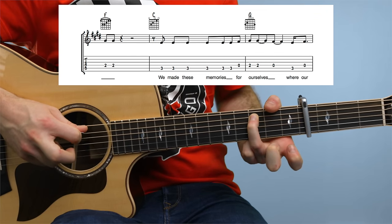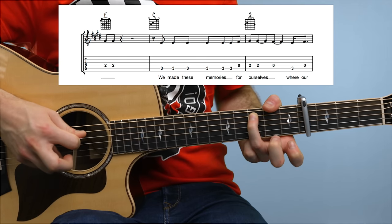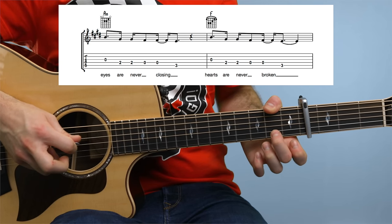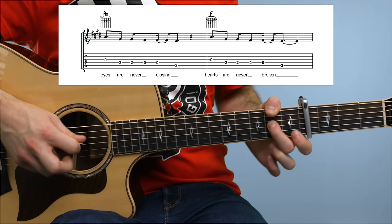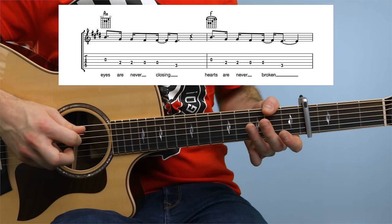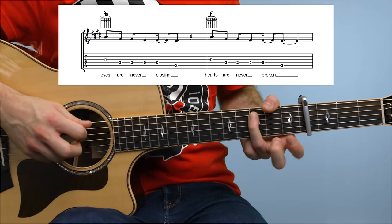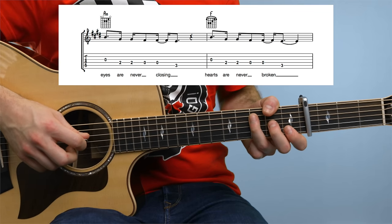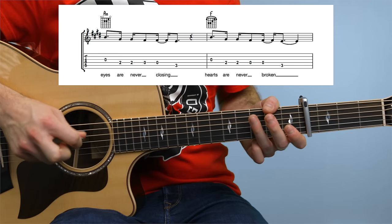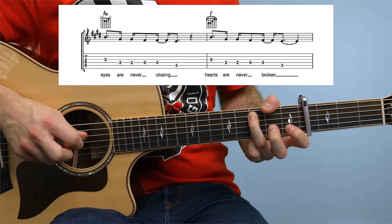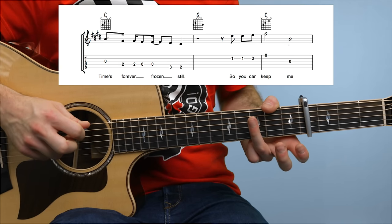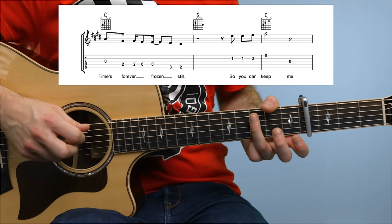3 on the fifth, open fourth, open third, double 2-0-2 on the fourth string, 3 on the fifth string. Then you repeat the previous bar once more. And again, but this time you end with 3-2 on the fifth string.